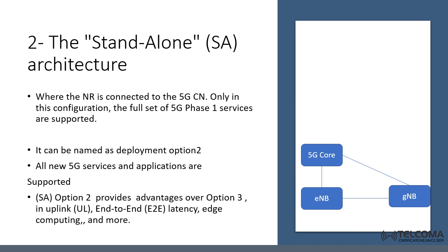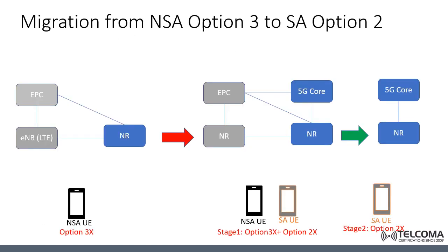Mobile operators can choose to deploy a fully isolated standalone option two network for verticals like vehicles and industrial automation with dedicated spectrum, while keeping the 4G network or mixing it with non-standalone option three. The ultimate goal for all operators is to reach the standalone architecture, so there must be a migration path from non-standalone option three to standalone option two.